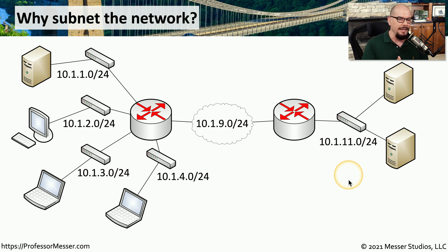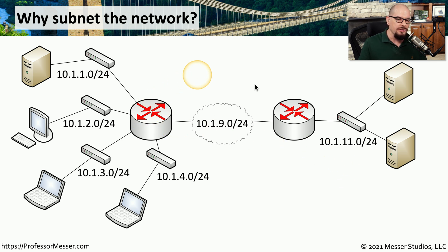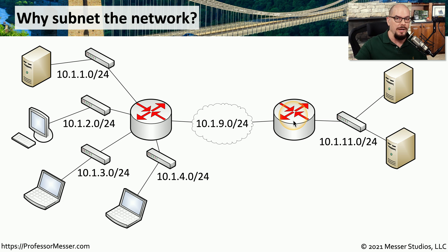One of the most common reasons is that it's very difficult to connect all devices to all other devices in the world simultaneously. It would require a massive amount of technology to know where every single device happens to be at any particular time. Instead, we use routers to separate the network into smaller pieces, and we simply send our traffic to the next router, who then determines where the next route would be after that. It's a much simpler way of managing such a large number of devices and still allowing us to communicate to all of these separate endpoints.